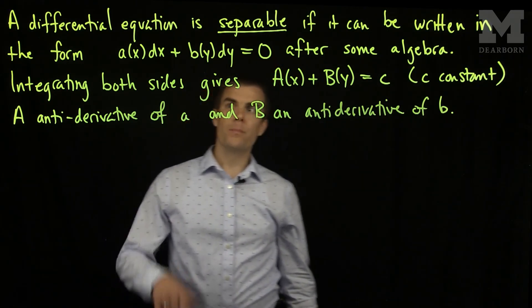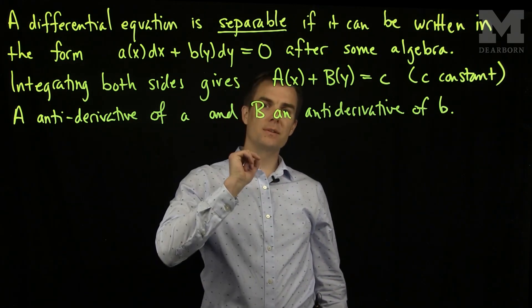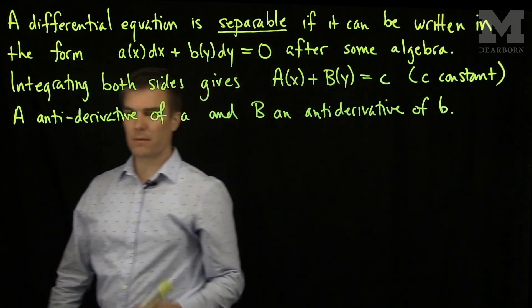So, that's all we need to do. Once we write the equation in this form, we integrate it and we replace the zero with a c, because when we integrate zero, we get a constant. Let's see an example of this.